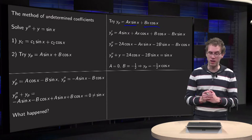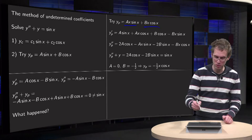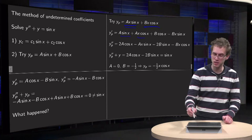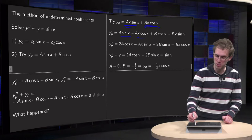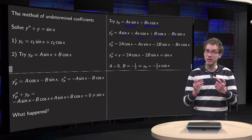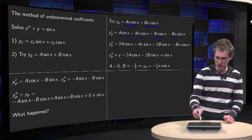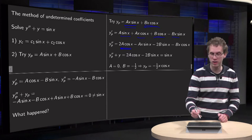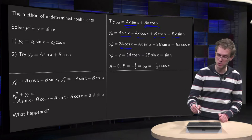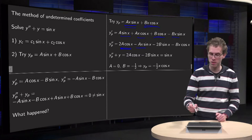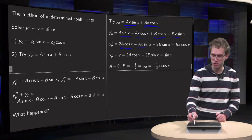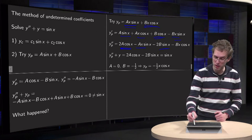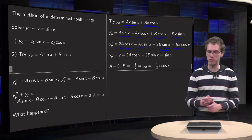What happens if we now differentiate? It's a bit more complicated. Differentiating A·x·sin(x) gives A·sin(x) + A·x·cos(x). Differentiating B·x·cos(x) gives B·cos(x) - B·x·sin(x). For the second derivative: differentiating A·sin(x) gives A·cos(x); differentiating A·x·cos(x) yields another A·cos(x) and -A·x·sin(x); differentiating B·cos(x) gives -B·sin(x); and differentiating -B·x·sin(x) using the product rule gives another -B·sin(x) - B·x·cos(x).